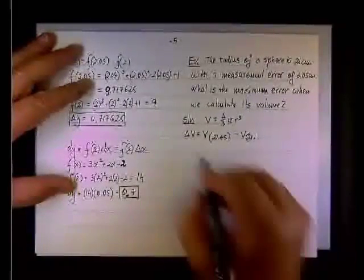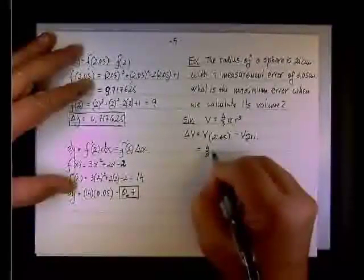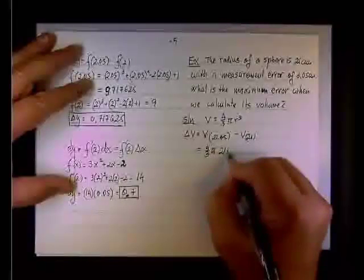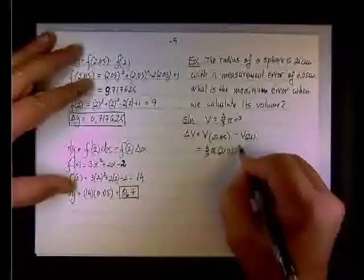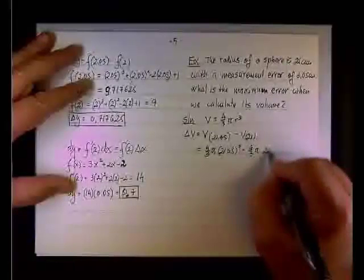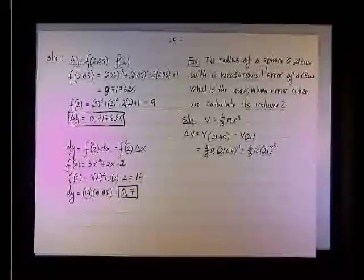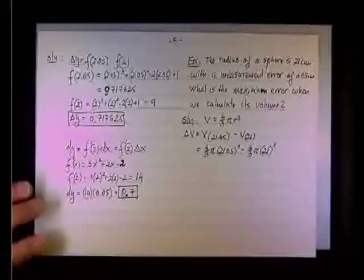And therefore it will be 4 over 3 pi times 21.05 cubed minus 4 over 3 pi times 21 cubed. And you can calculate it, but that's not the route we want to go because now we have a better tool to calculate.